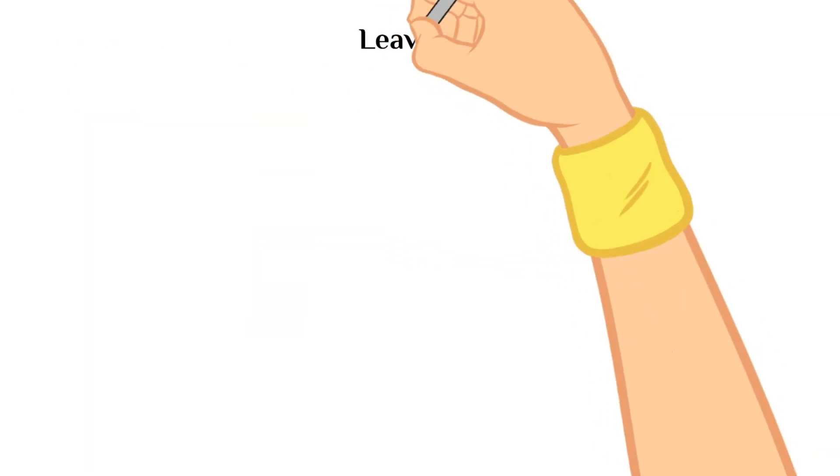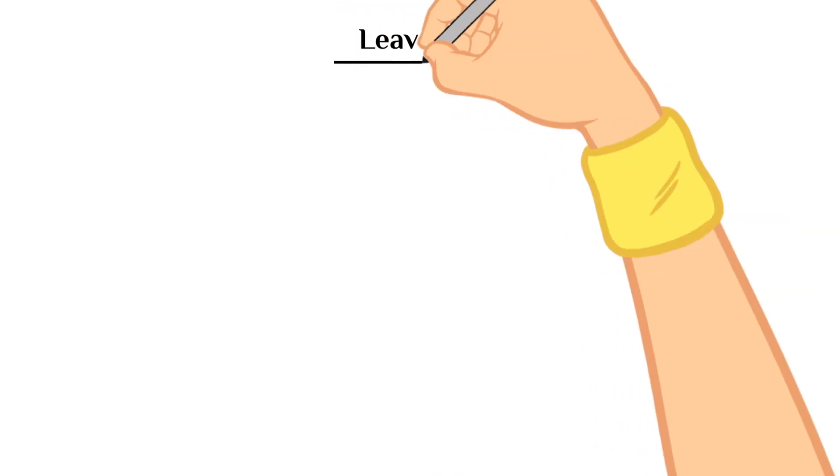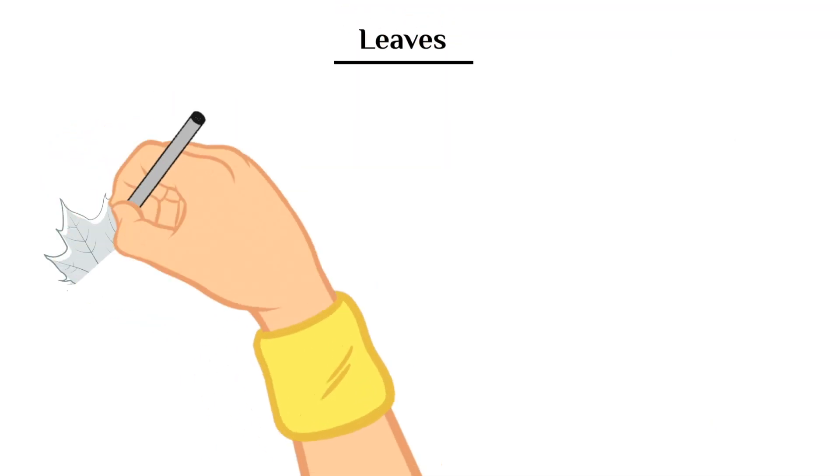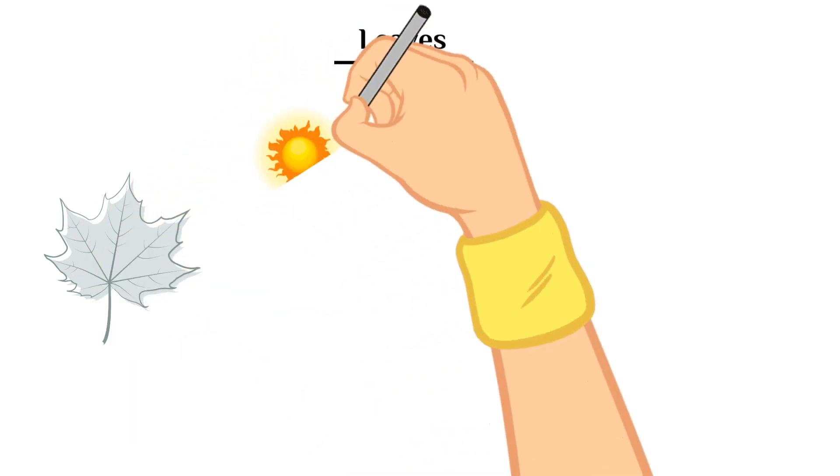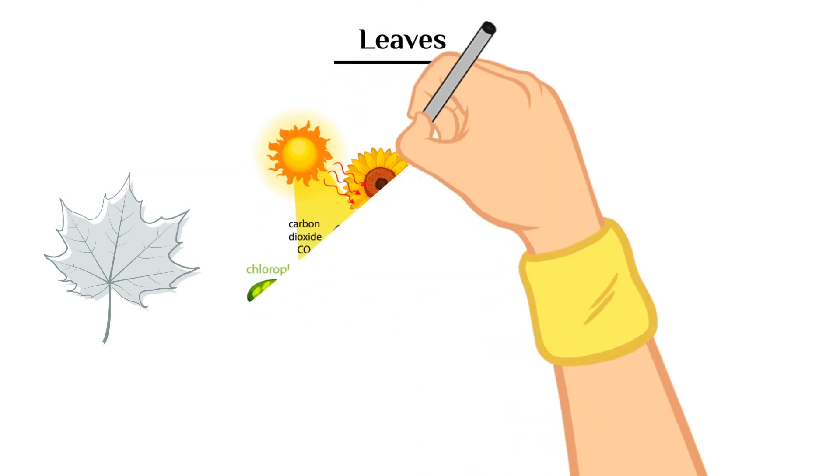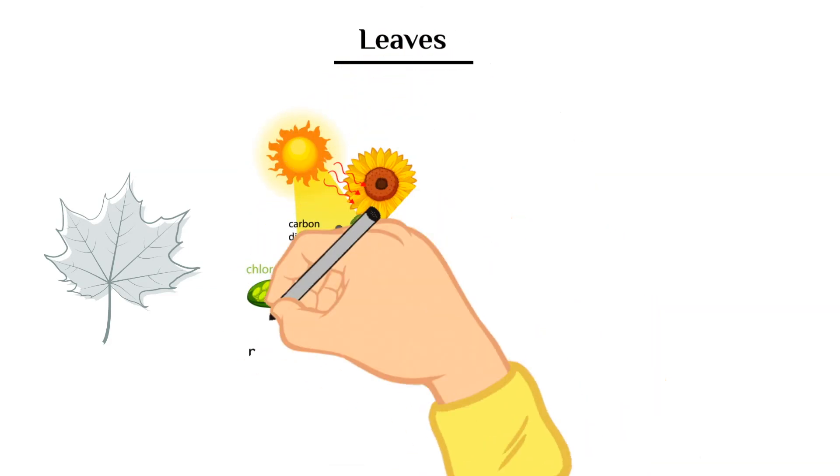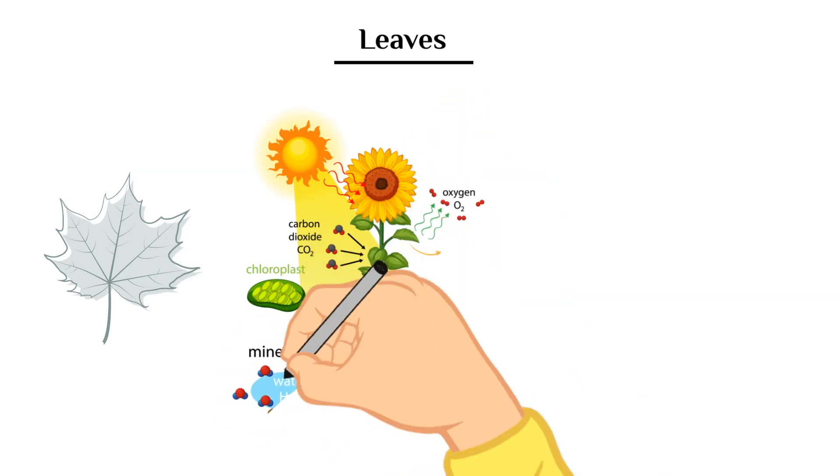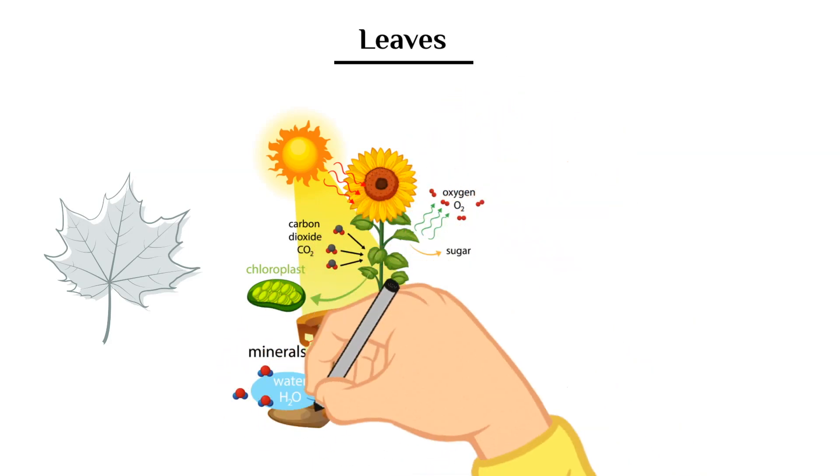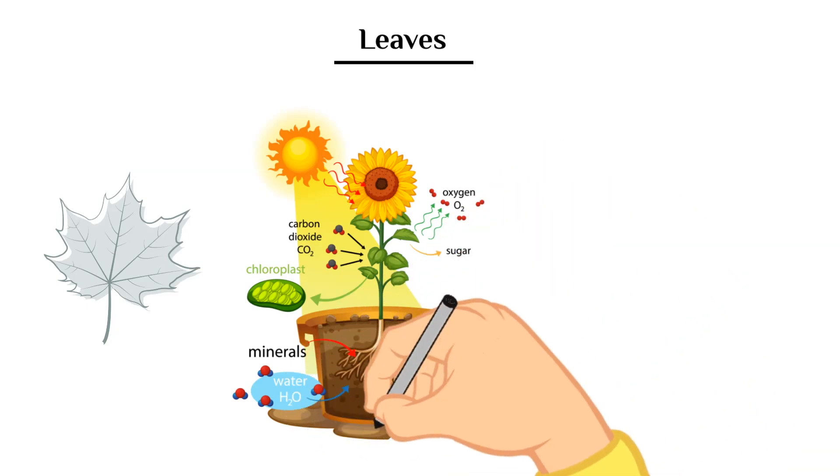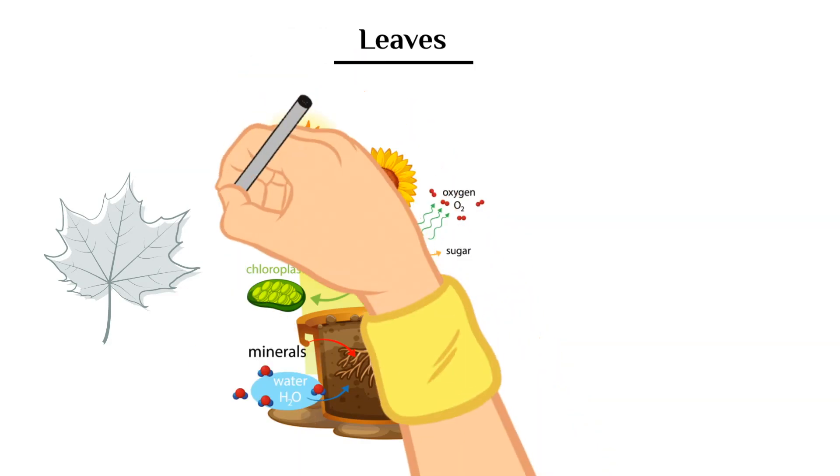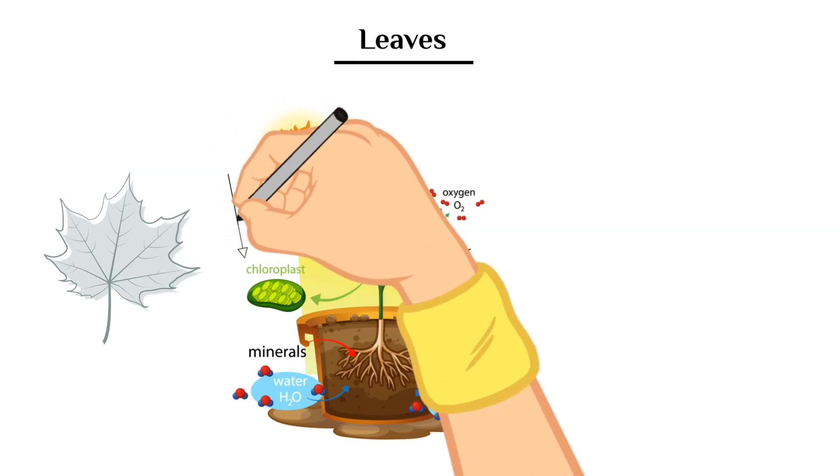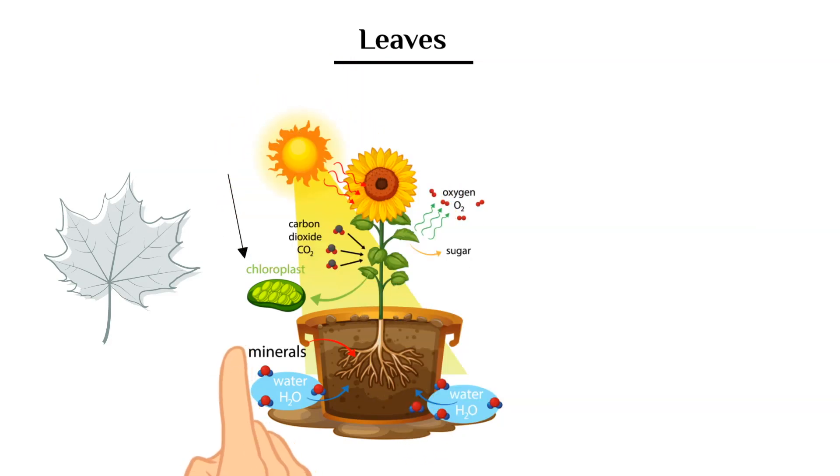Leaves are where the food is made through a process called none other than photosynthesis. And you've probably heard this term before. Photosynthesis is when a plant is able to absorb sunlight and turn it into food and nutrients for the plant. This is a very interesting process. And there is a green colored substance called chlorophyll in these special structures called chloroplasts that is primarily responsible for this.